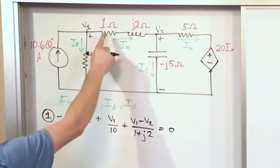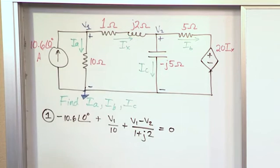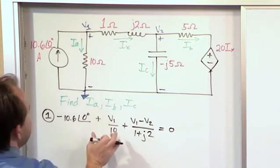So, this is a current, this is a current, and this is a current. All of them must sum to 0. We assume that these two are going out of the node and that's why they have positive signs.